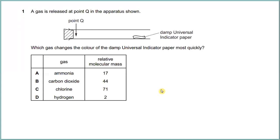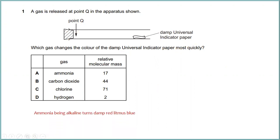Question number one: a gas is released at point Q in the apparatus shown, where we have damp universal indicator paper. Which gas changes the color of the damp universal indicator paper most quickly? The answer is ammonia. Being alkaline, it turns damp universal indicator paper blue, so the answer is A.